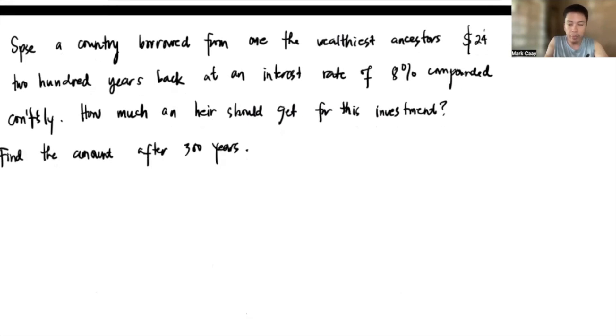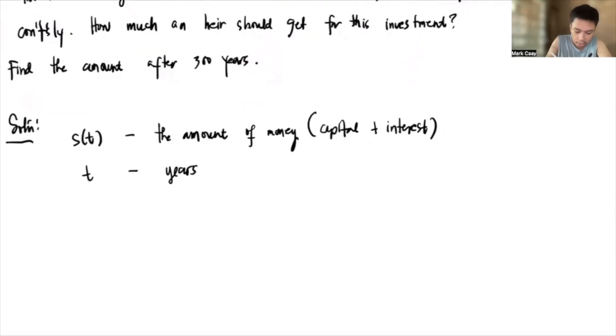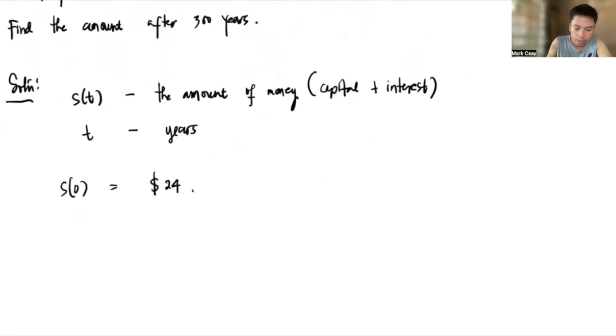So next problem. Suppose a country borrowed from one of the wealthiest ancestors $24. So that's way too big by then. 200 years back. At an interest rate of 8% compounded continuously. So how much should the heir get from this investment and find the amount after 300 years? So how do we solve this? So we let S(t). So this is the amount of money. So this is the capital plus the interest. So our T is measured, our years is measured in T years. So that's the years. And initially, S(0), that's actually the $24. This is what was borrowed, right?